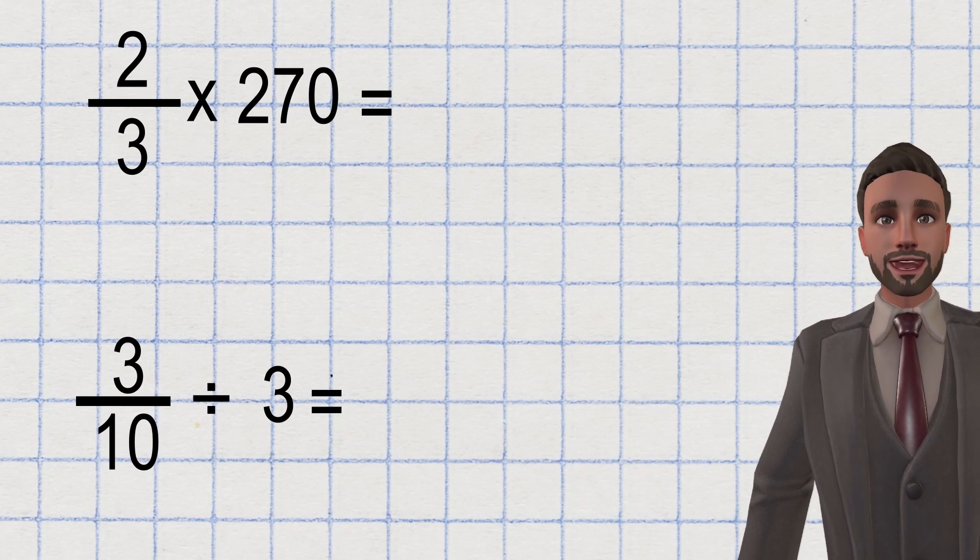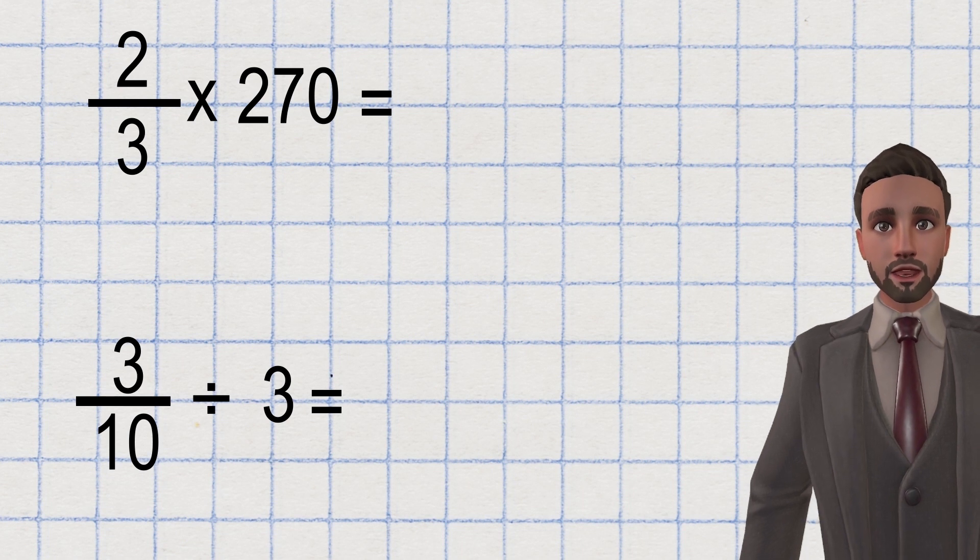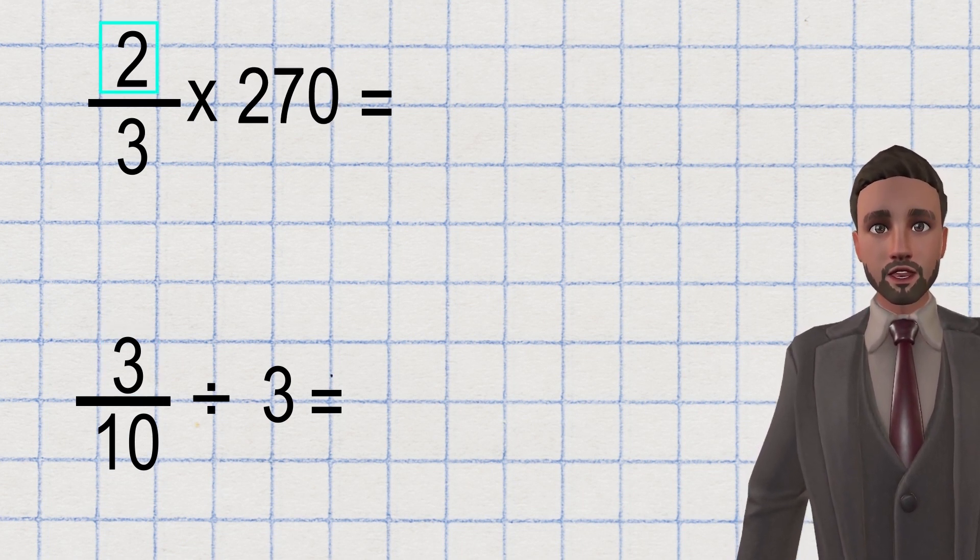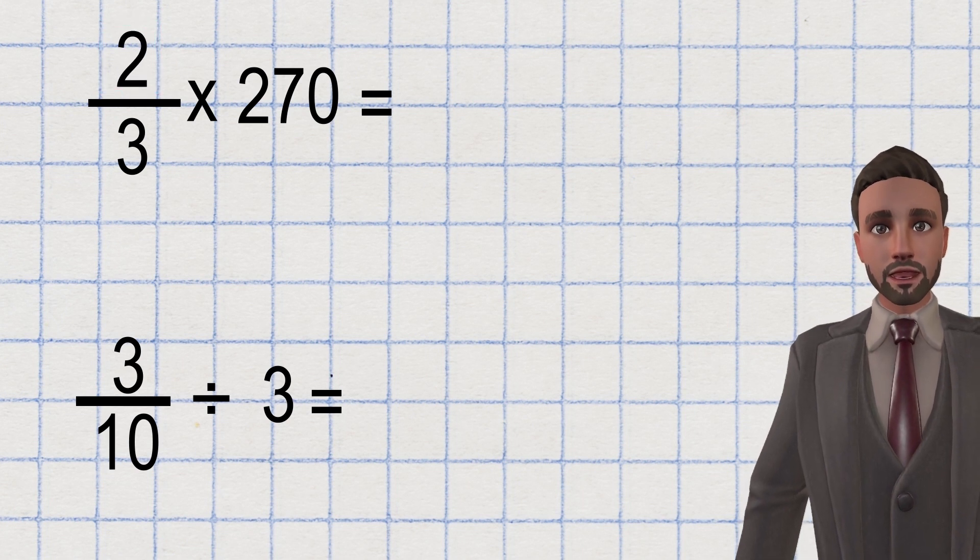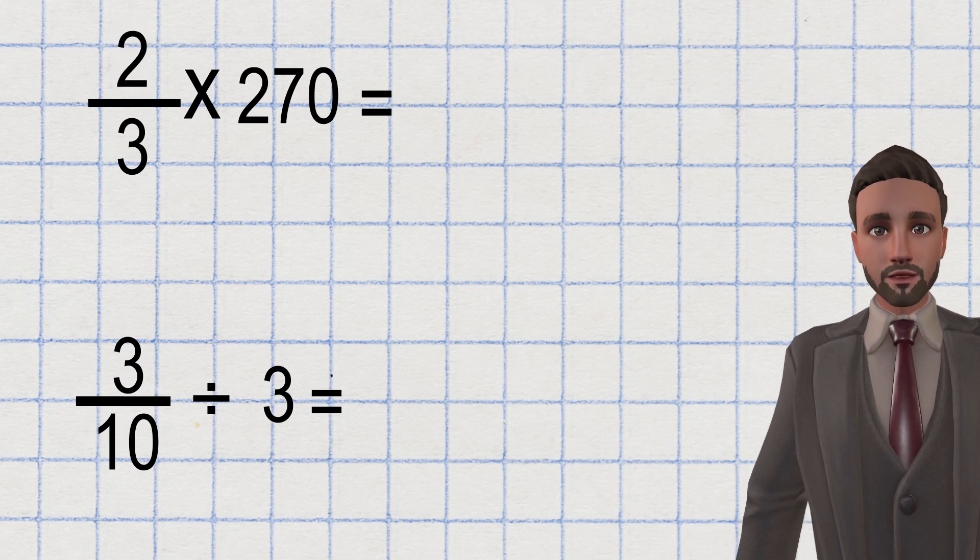Next, I'm going to be looking at multiplying and dividing our fractions by a whole. What you want to do for both of these is multiply or divide the parts that you have. For example, in two thirds, you have two parts out of three. It's a multiplication question. So you want to simply multiply the parts that you have. Two parts multiplied by 270 gives you 540 parts out of three.